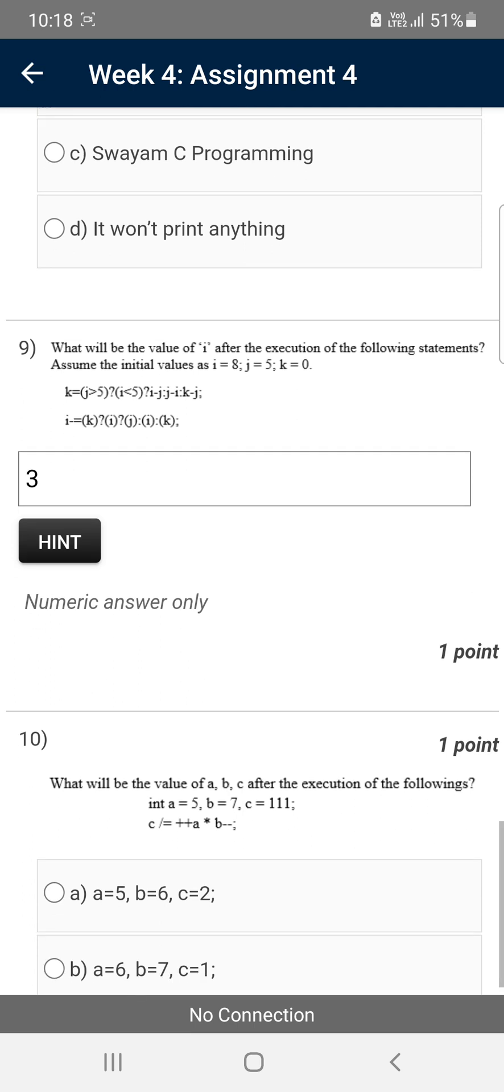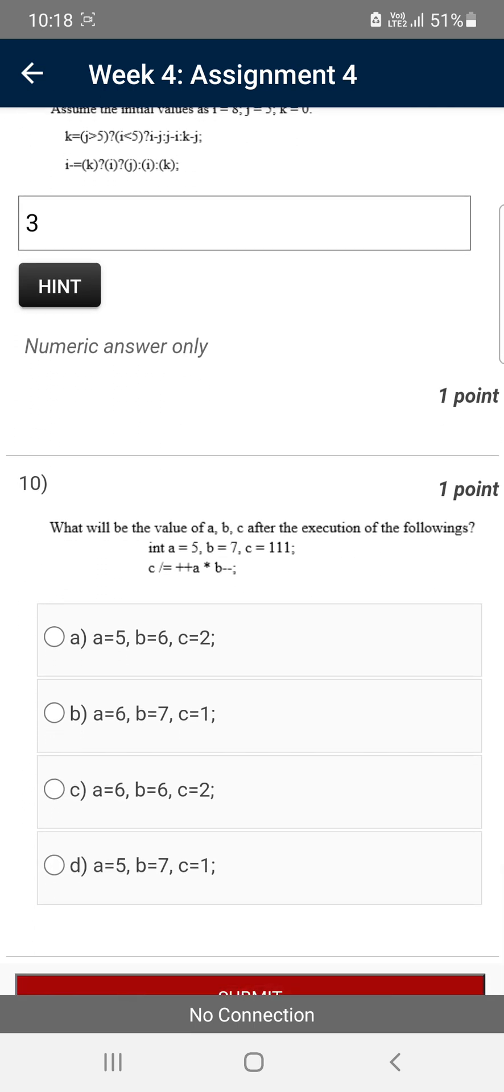Moving on to the tenth and final question of Assignment 4: what will be the value of a, b, and c after the execution of the code? The answer is option C: a equals 6, b equals 6, and c equals 2.